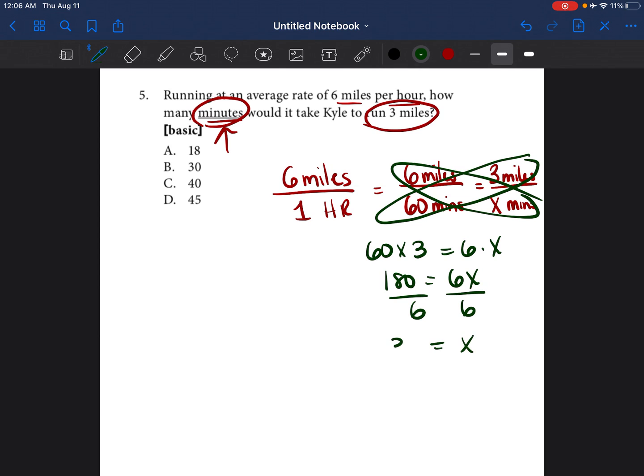Divide both sides by six. So X is equal to 30, or 30 minutes. It will take to run three miles. So the answer would be B, 30.